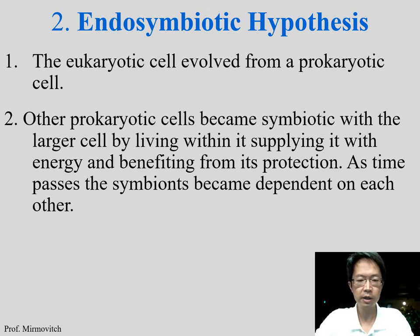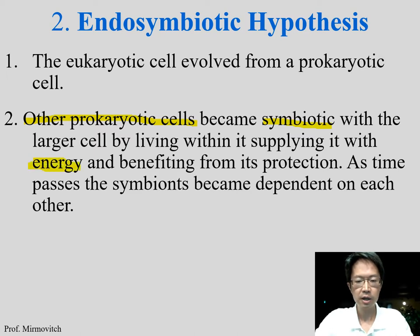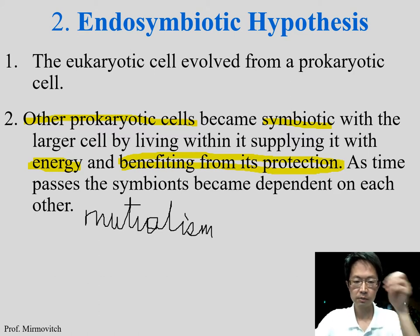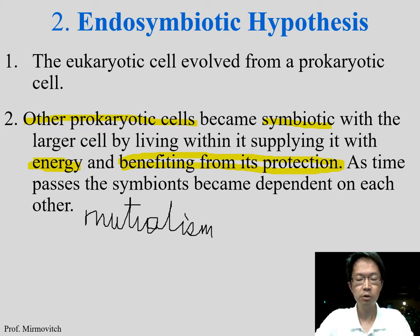Eukaryotic cells evolved from prokaryotic cells. The other prokaryotic cells like mitochondria or chloroplasts became symbiotic with the larger cell, living within it and supplying energy. In return, they get protection and supply of nutrients. Now they are dependent on each other — we call this mutualism, benefiting each other.